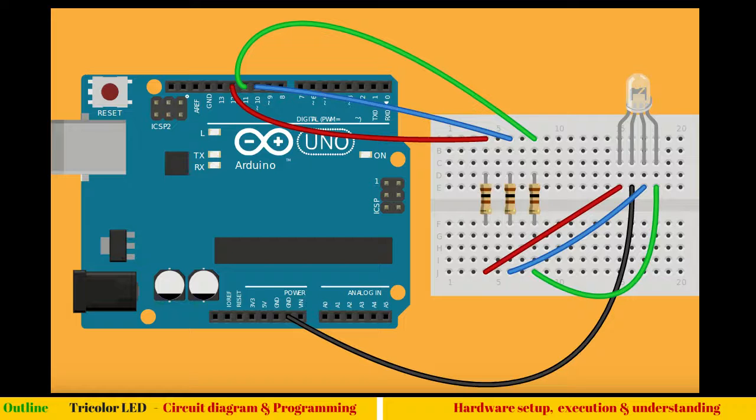Tricolor LEDs are easily available in market and they are very affordable too. So here we have a common cathode tricolor LED, you can see it here. Common cathode means a ground, a cathode means a negative terminal is common to these three pins: red, blue and green.